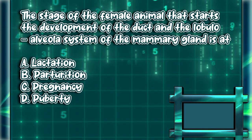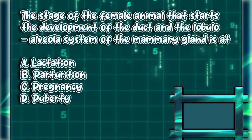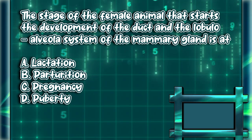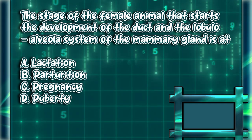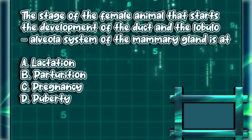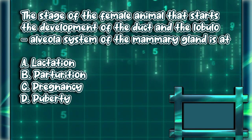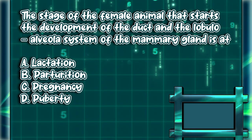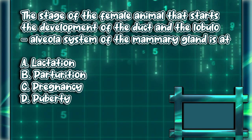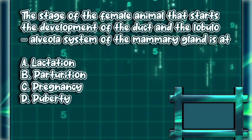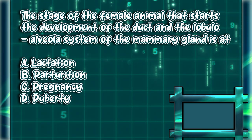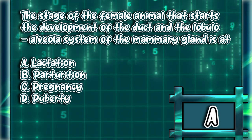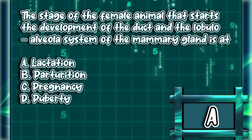The stage of the female animal that starts the development of the duct and the lobulo-alveolar system of the mammary gland is at: A. Lactation. B. Parturition. C. Pregnancy. D. Puberty. The answer is letter A.